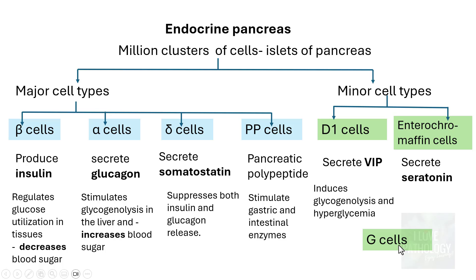The G cells secrete gastrin. G cells are predominantly found in the pylorus of the stomach, but they can also be found in the duodenum and pancreas — so this is a minor cell form.